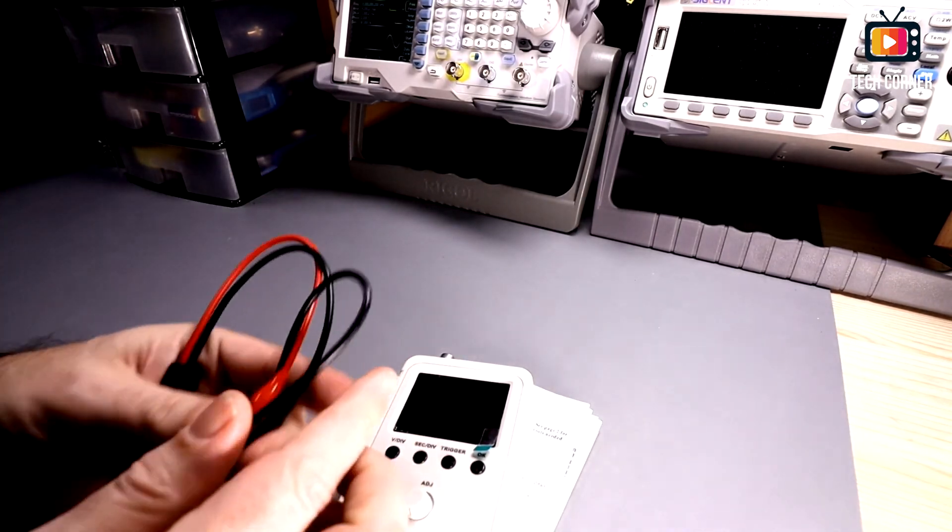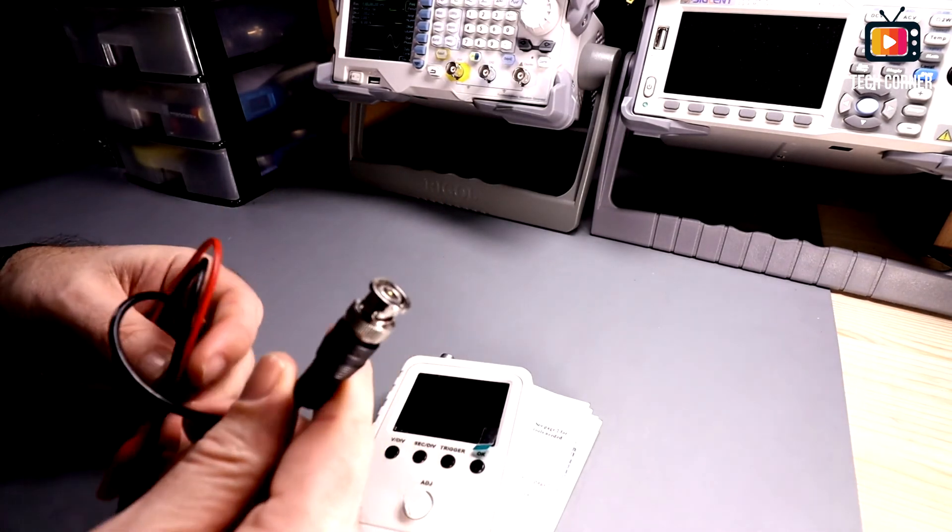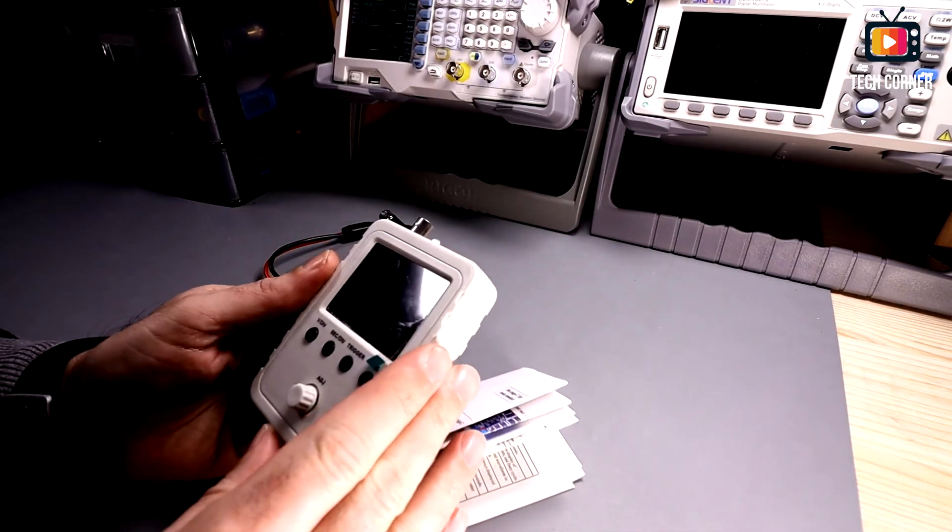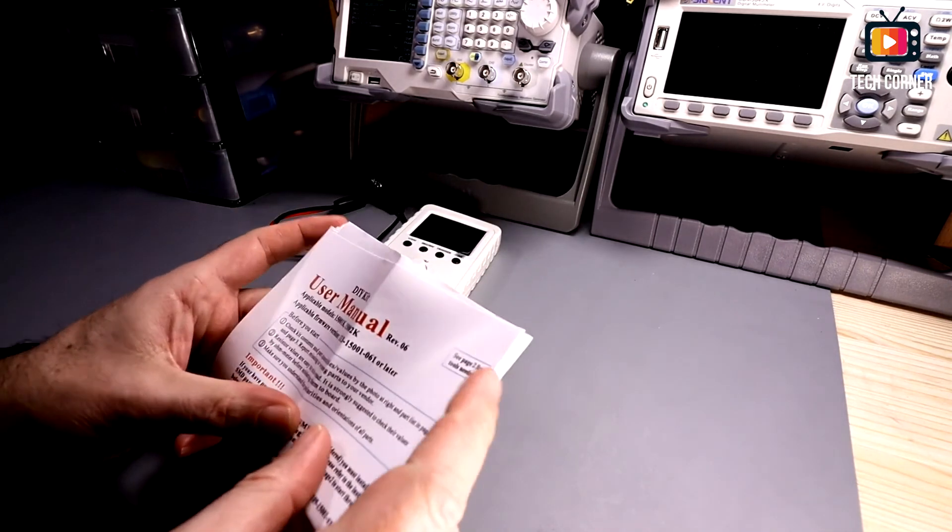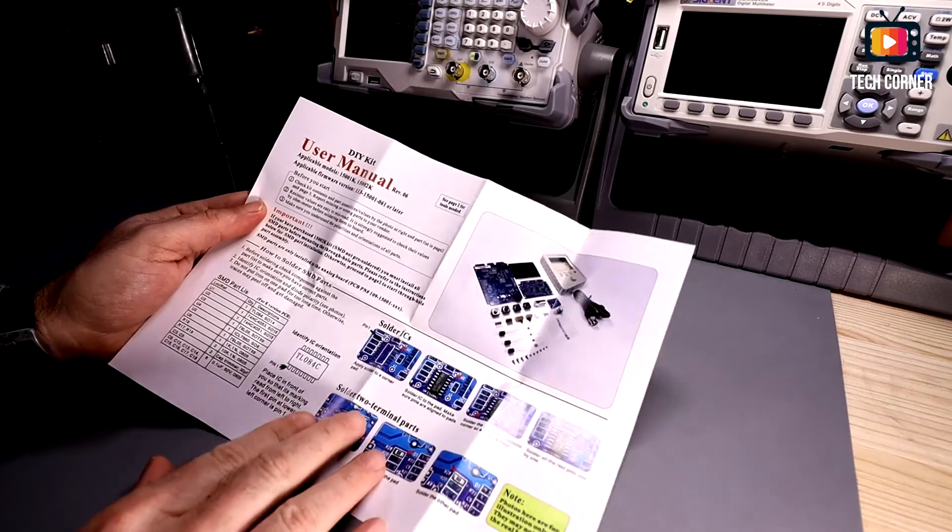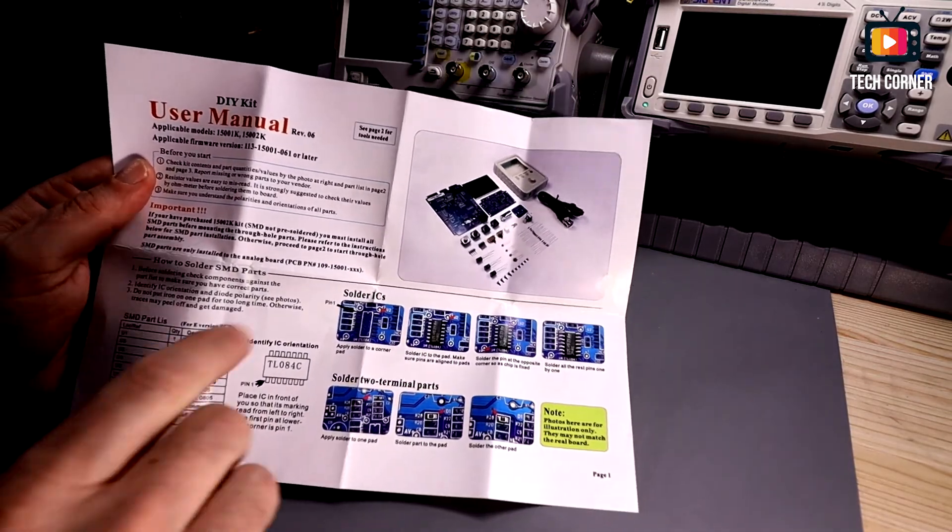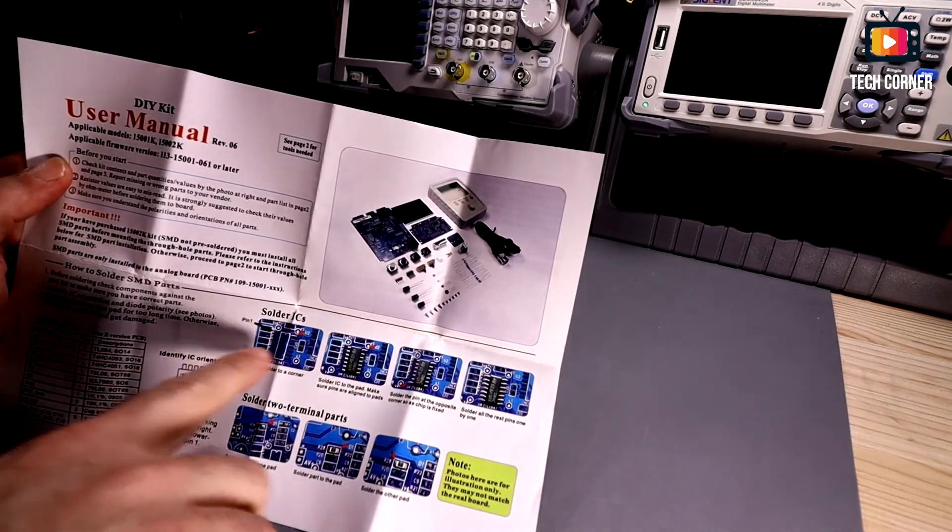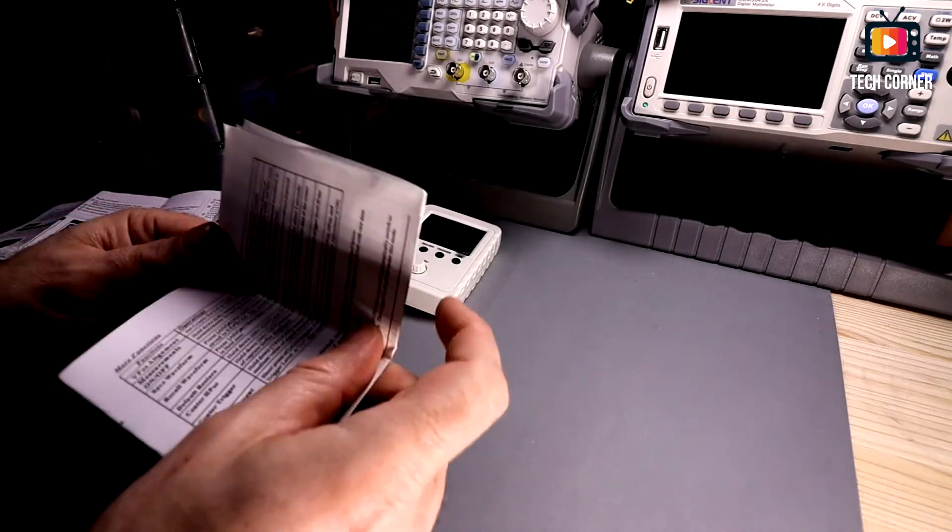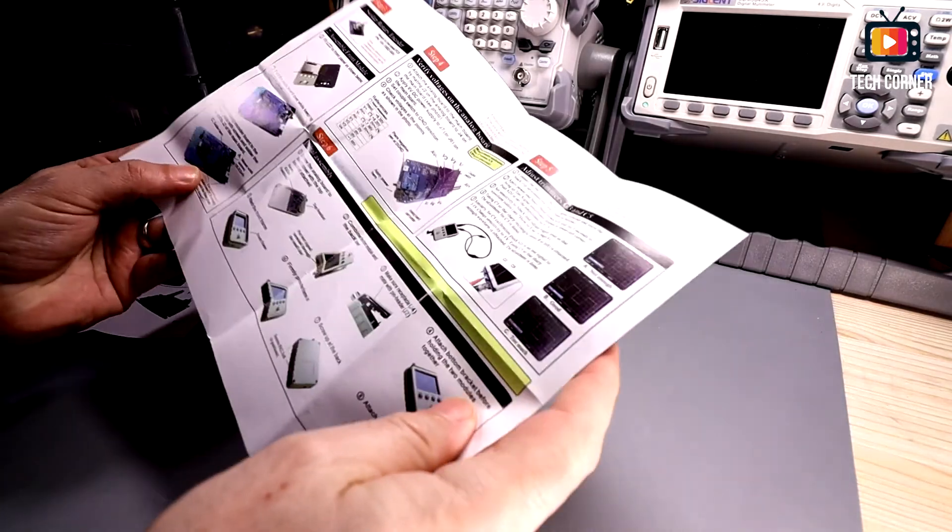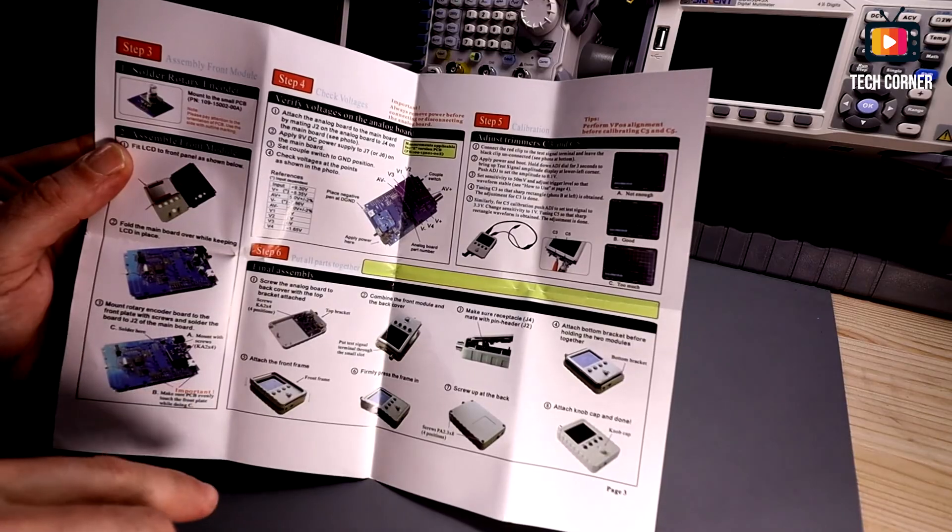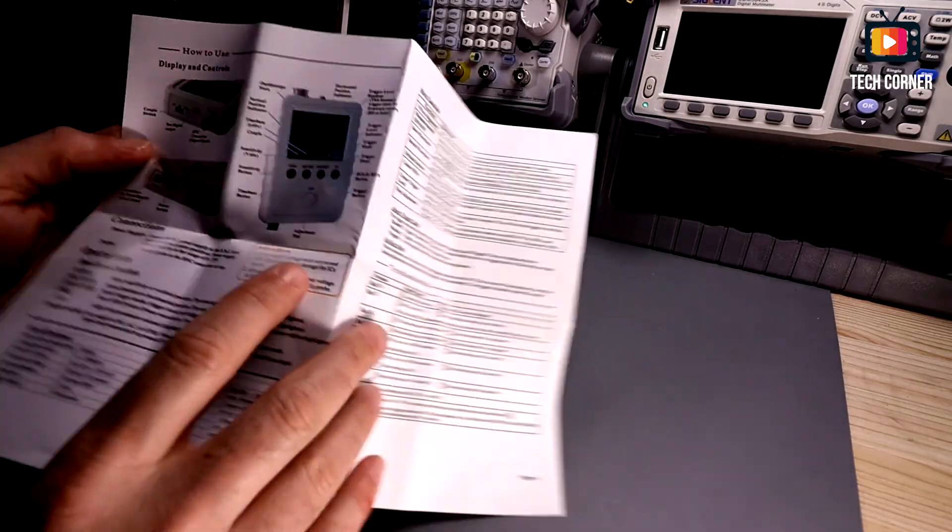There are several versions of this oscilloscope and the version that I bought came with BNC with two alligator clips. I bought the already assembled version but we can also buy a do-it-yourself version. We have here a user manual that also has the assembly instructions. We have here in the corner the other version to be assembled with all the components and instructions on how to assemble.